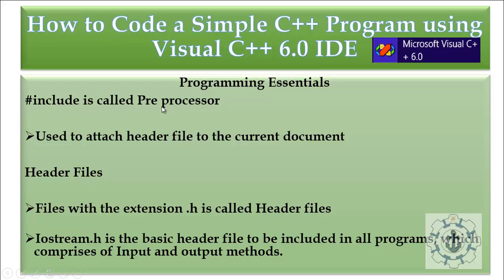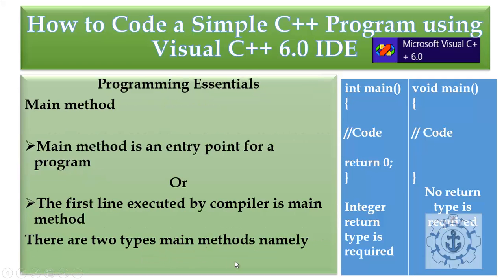The preprocessor is used to attach a header file to your current document — whenever you want to link any external document to the current document, you use #include followed by a header file. Files with the extension .h are called header files. iostream.h is a basic header file to be included in all programs, which comprises input and output methods.